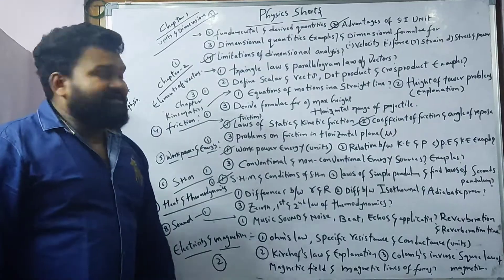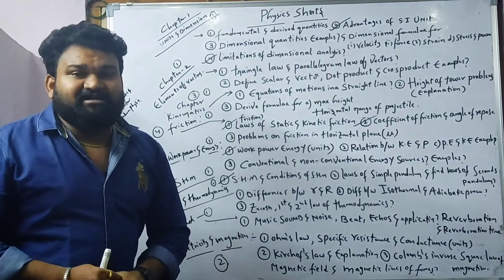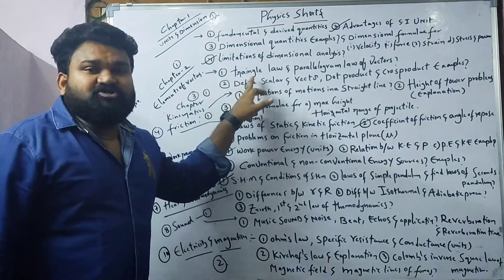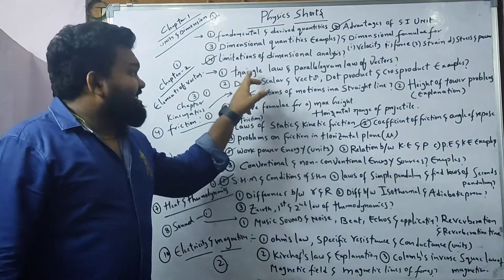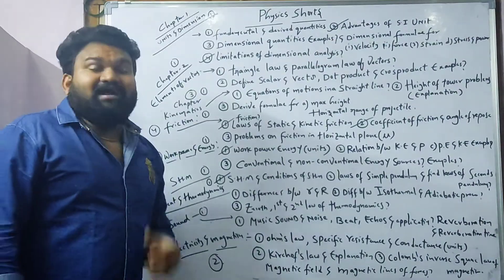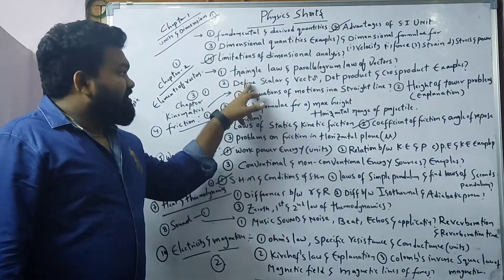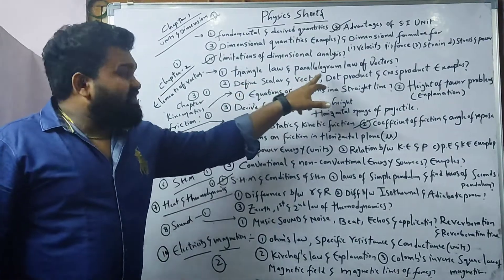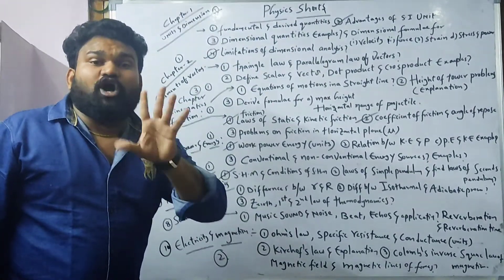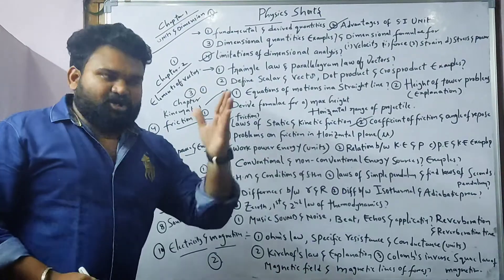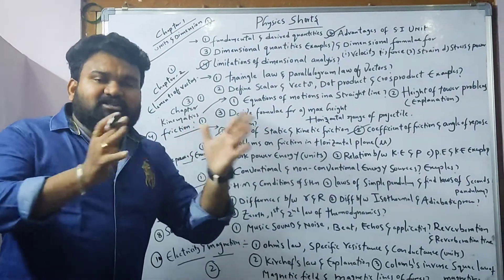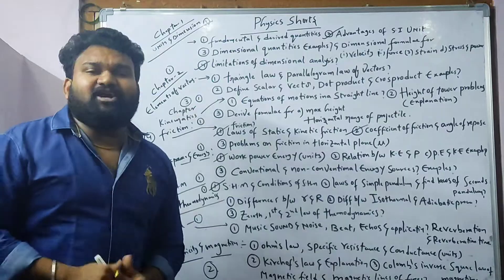Coming to the second chapter — elements of vectors. In this chapter we are going to study triangle law and parallelogram law of vectors. Define scalar and vector. What is dot product and what is cross product, with examples.